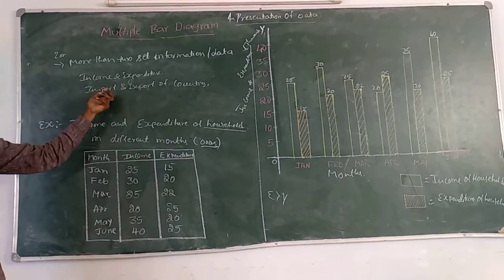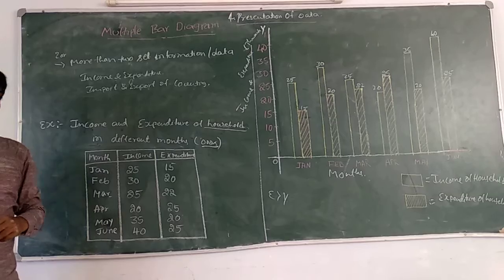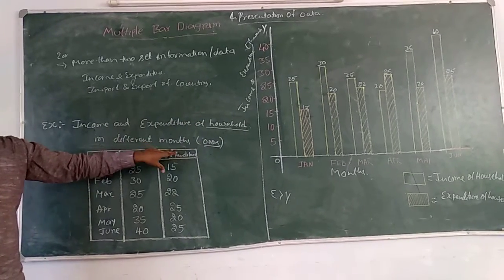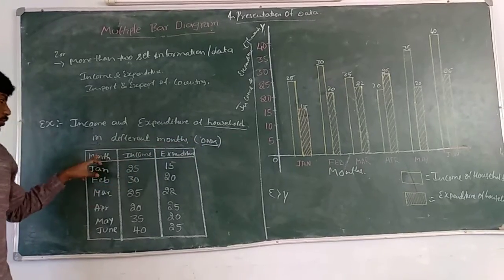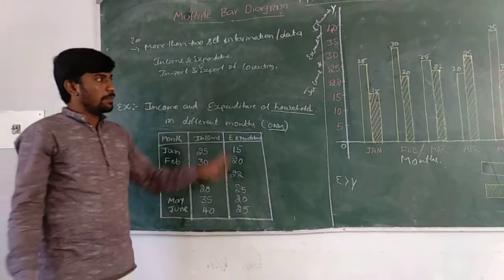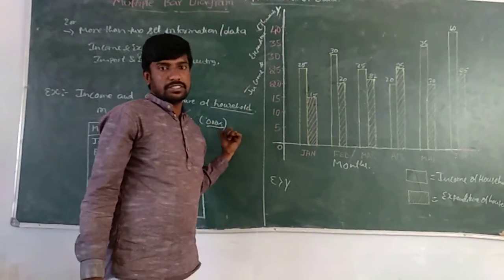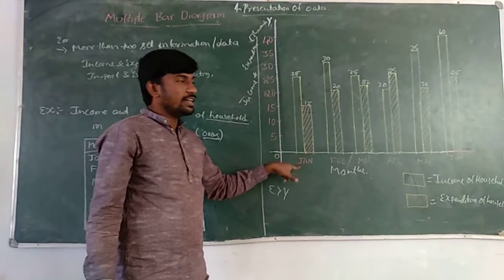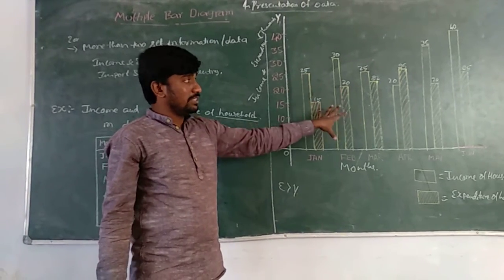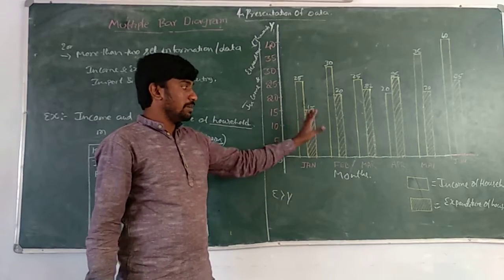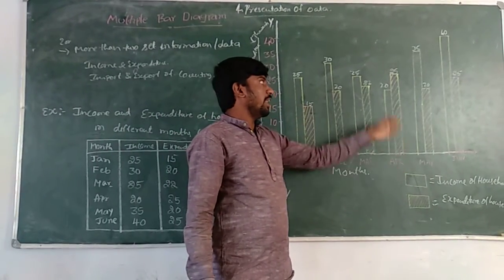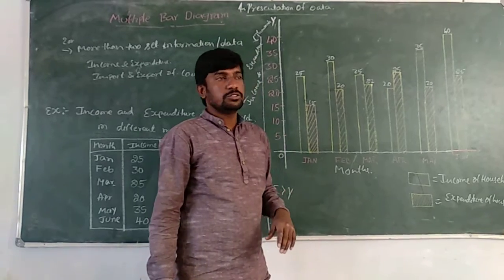Examples include income and expenditure, import and export, or marks in different subjects across different tests. Here I am taking the example of income and expenditure of a household in different months, presenting the information in thousands. We have data for six months — income for six months and expenditure for six months — all presented in a graph. The empty rectangular bar represents the income of the household, and the rectangular bar with a cross line represents the expenditure. By seeing this, we can understand that in many months income is exceeding the expenditure, except in the month of April, where expenditure exceeds the income. This is your multiple bar diagram.